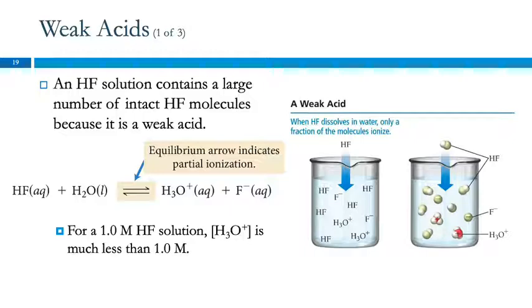And we'll talk later about why some acids are strong and some are weak. So if we look at a one molar HF solution, this is a weak acid. If we start with one molar mole per liter of HF, at equilibrium, the concentration of H3O plus is going to be less than one molar. Because this is not going to go all the way. It's an equilibrium. And there's a constant for that.